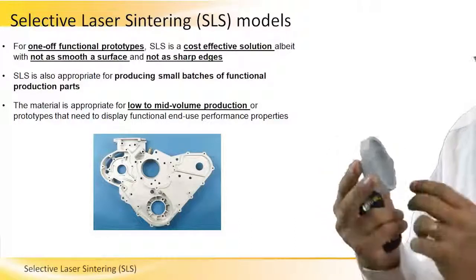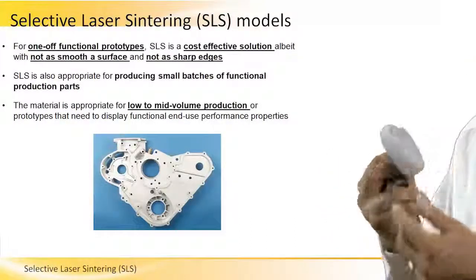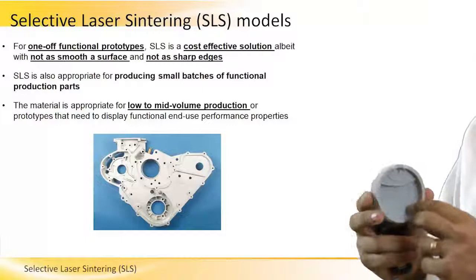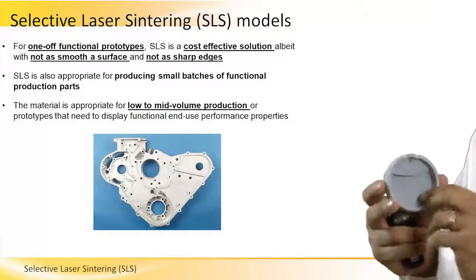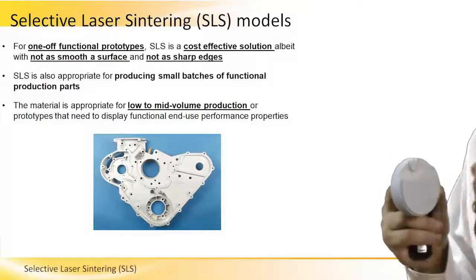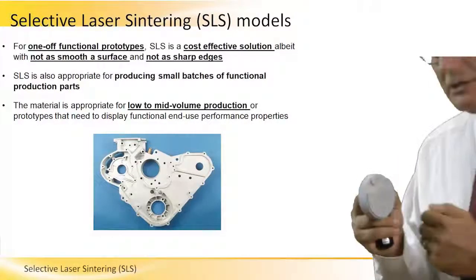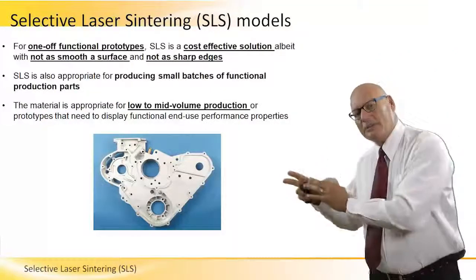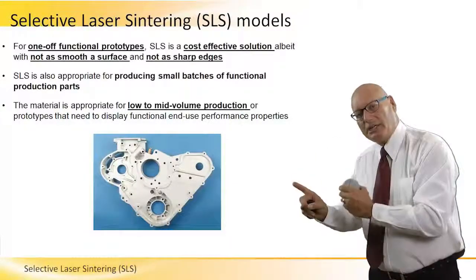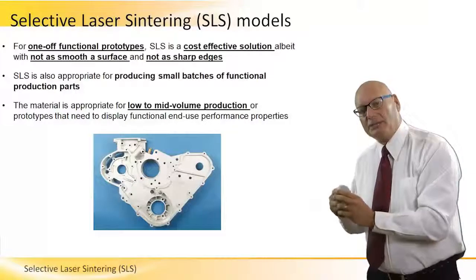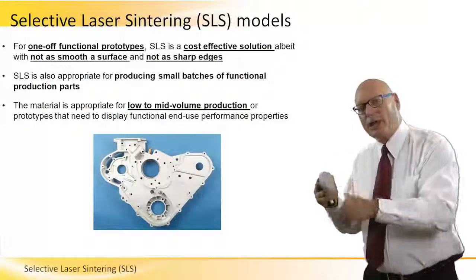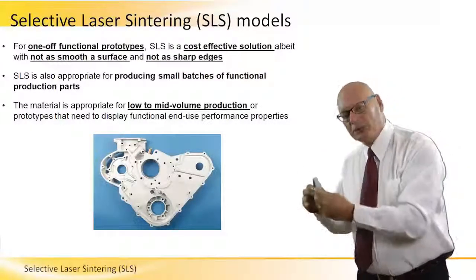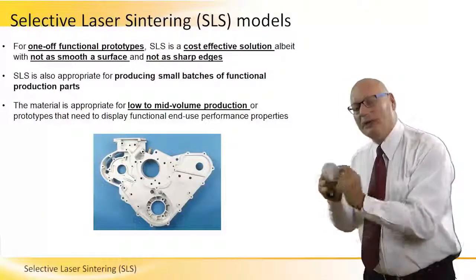It took approximately six or seven minutes to manufacture this particular part, and it cost approximately three to three and a half dollars. That's how quickly and cheaply this process works. If we made a mistake, we can very easily fix it — update the CAD files, convert to STL, send it to the SLS machine, and minutes later we have a revised, upgraded model. After two, three, or four cycles, we have a functional model. The surface is not smooth, but it is functional.